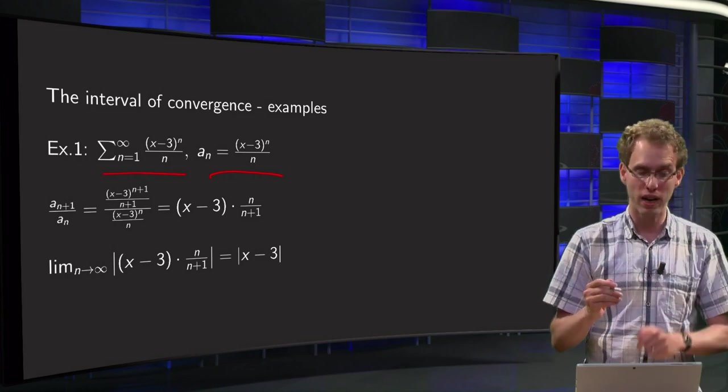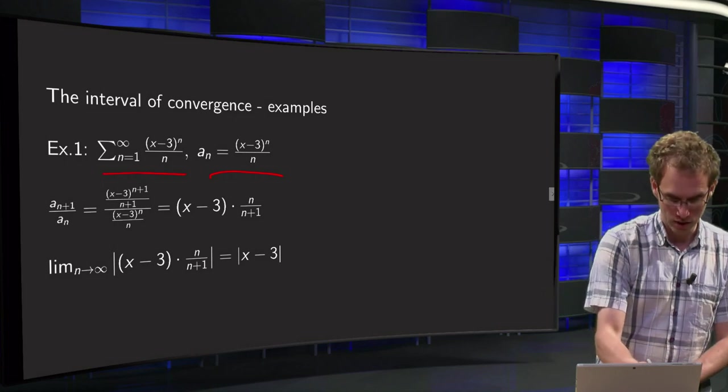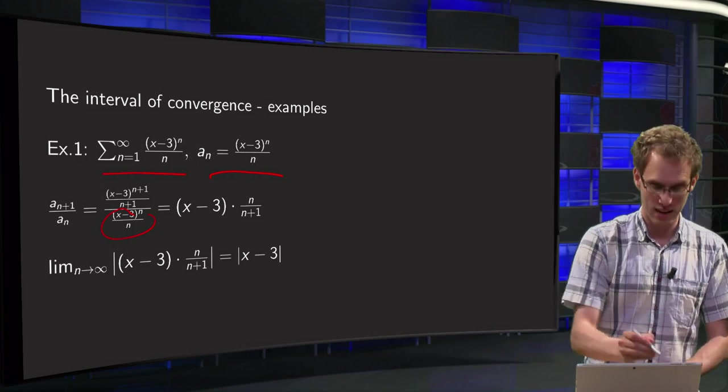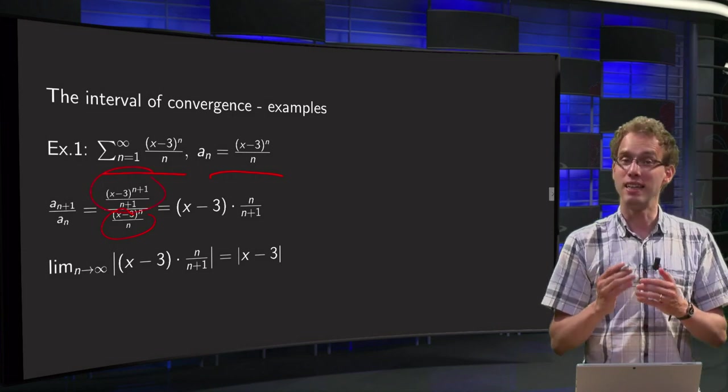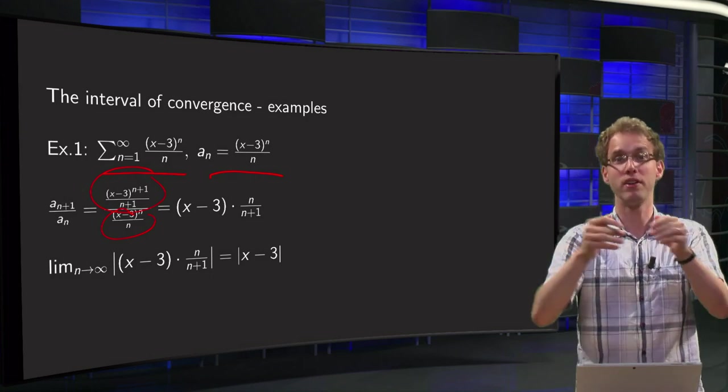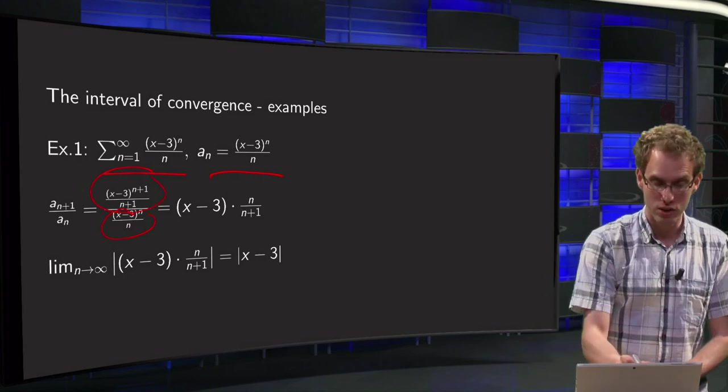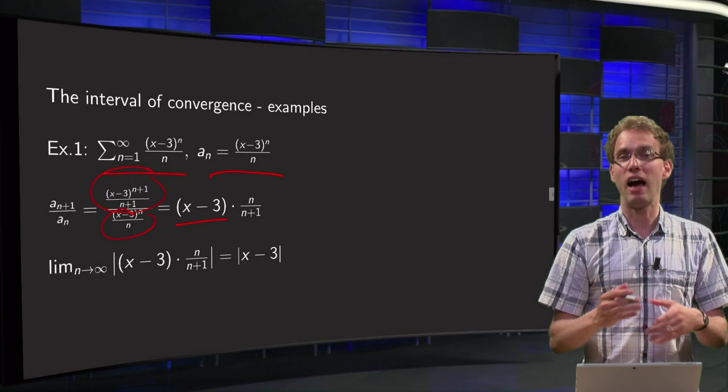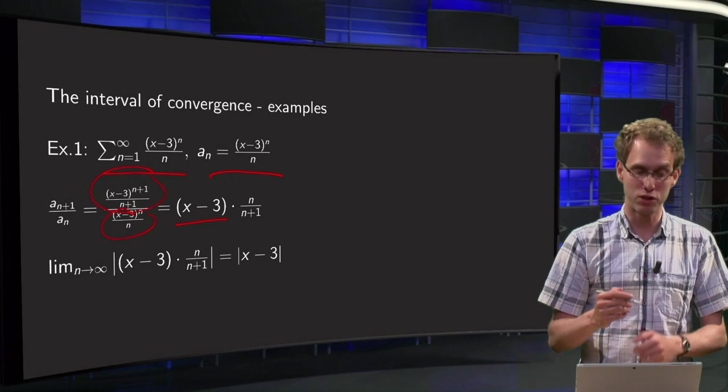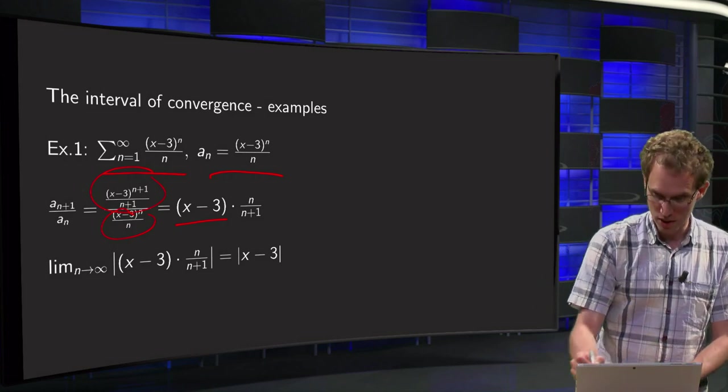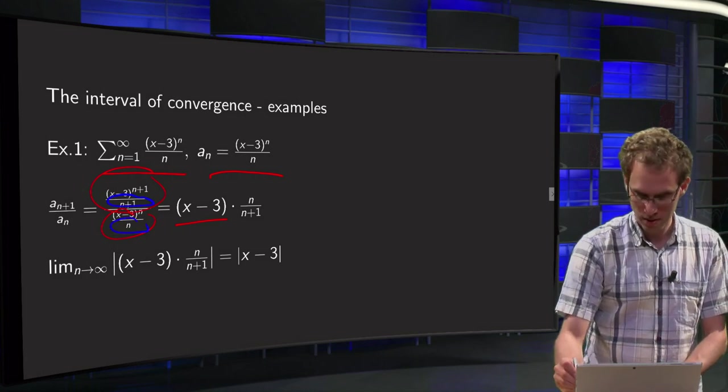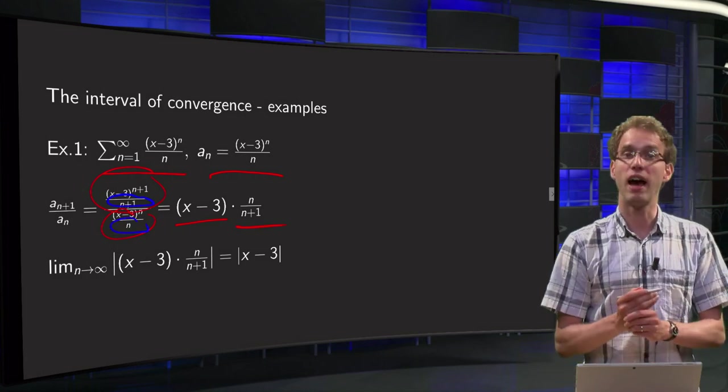So we have to compute a_{n+1} over a_n. Our a_n is over here again, and a_{n+1}, just plug in n+1 instead of n. And the nice part is that you have always some powers of x, so we have (x-3)^{n+1} divided by (x-3)^n. So only x-3 is left. And then from the c_n, from the coefficients we often get some rubbish. We still have here the n+1 and we still have the n and that works out to n over (n+1).